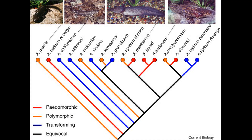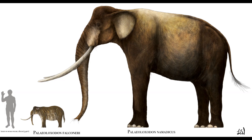The family of the axolotl, Ambystomatidae, are found from Mexico to southern Canada and are quite complex in their life histories. Some species undergo full metamorphosis, some are facultative pedamorphs, and others are obligate pedamorphs.